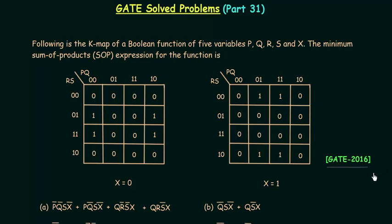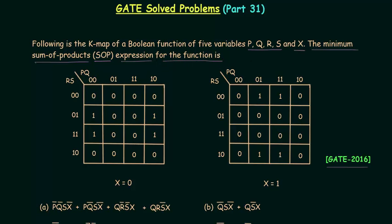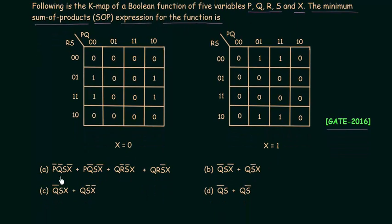In a 2016 paper, a 5-variable Karnaugh map problem was given, which we will solve in this lecture. The kmap is for a boolean function of 5 variables: P, Q, R, S, and X. We need to find the minimum sum of products (SOP) expression for the function. There are 4 options given in the problem, and we have to find the correct one based on the result from this 5-variable kmap.